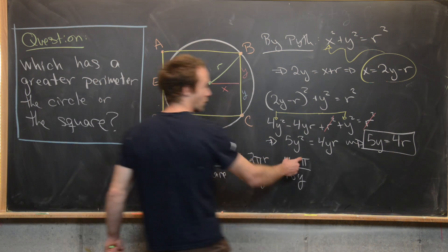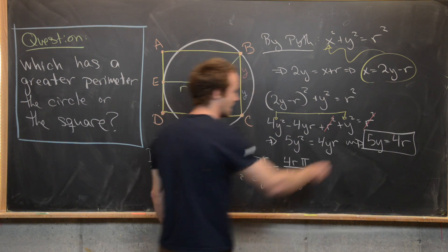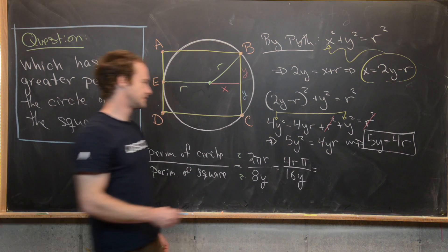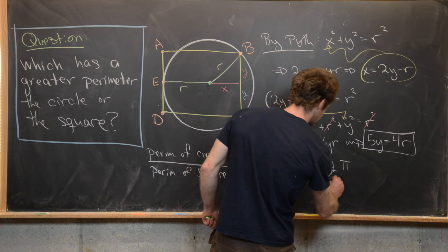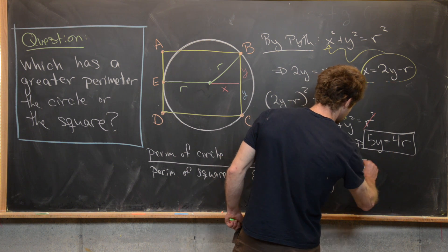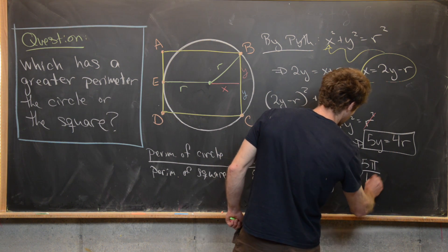But we know that 4R is equal to 5Y by our previous calculation. So that gives us 5Y times π over 16Y. But that's equal to 5π over 16.